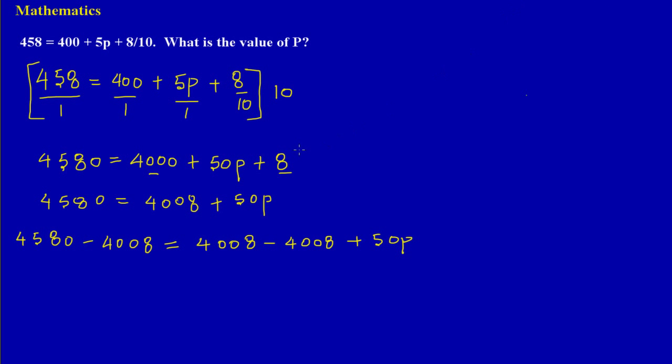So essentially what we're left with here, we have 4580 minus 4008, so now I know that this looks like it would work out to be 572. So here I have 572, and that is equal to, well, a positive 4008 will cancel out with a negative 4008, so I'm left with 50p.